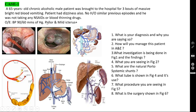On examination, BP is 90/60, patient is pale and has mild jaundice. He is a known chronic alcoholic with massive hematemesis and dizziness indicating significant blood loss. He is not taking any NSAIDs or blood thinning drugs. BP confirms he is hypotensive. Upper GI endoscopy clearly shows dilated veins in the esophagus — this is esophageal varices due to portal hypertension.